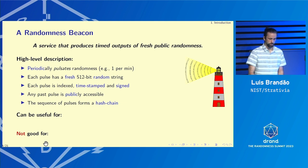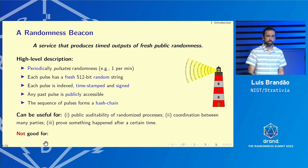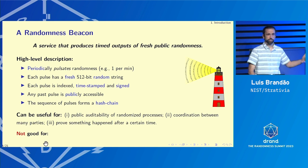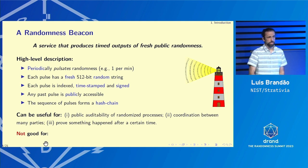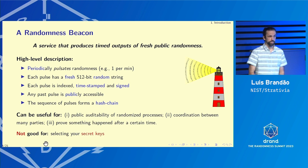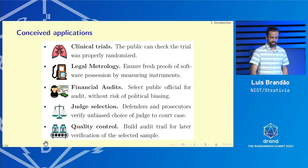What is this good for, and maybe not good for? Broadly speaking, we think of the main application as enabling public auditability of randomized processes — whenever randomization needs to be used but later needs to be verified. It allows for coordination between many parties, and it also allows proving that something happened after a certain time, if you trust that a particular pulse occurred at its timestamp. We always like to give the disclaimer that this is not good for selecting public keys, even though the randomness is supposed to be the best quality possible — it should only be used for certain use cases.